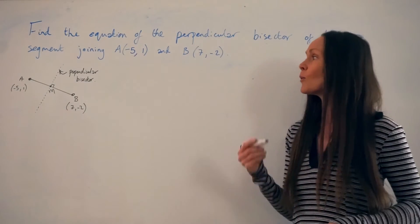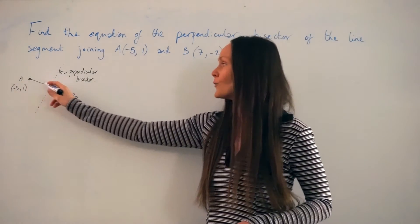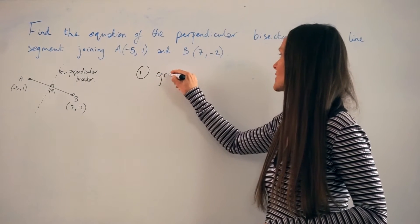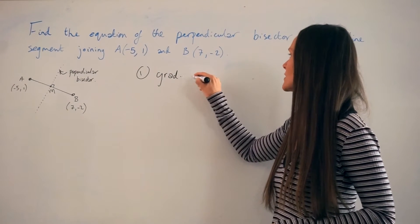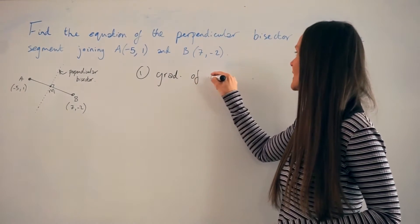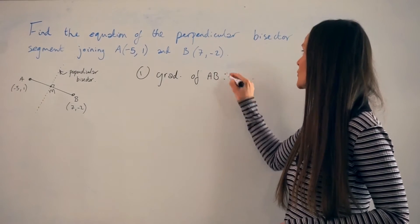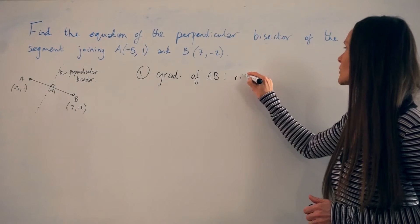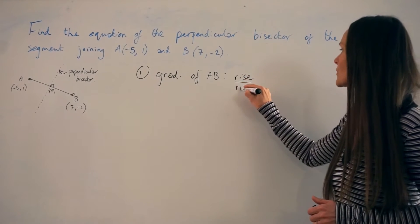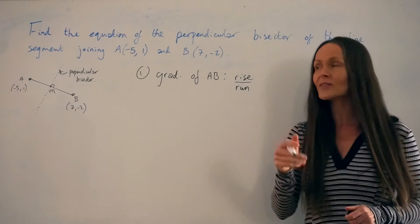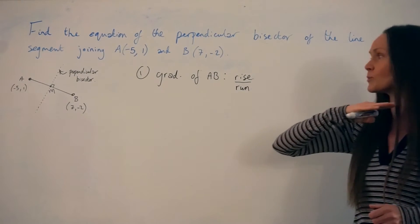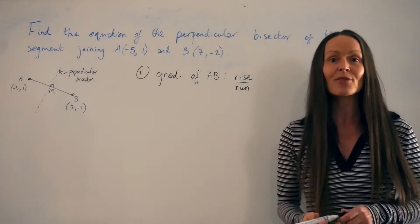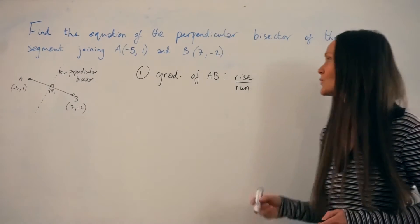Let's start with the first step: working out the gradient of the straight line AB. To work out the gradient of the line AB, I'm going to use a method called rise over run. That means we're going to work out the difference between the Y values and divide by the difference between the X values. This is how we always work out the gradient of a straight line.